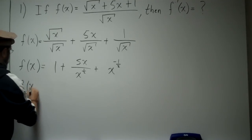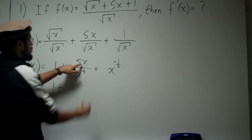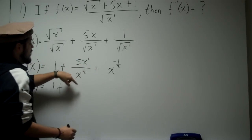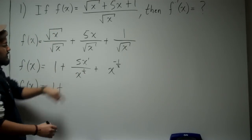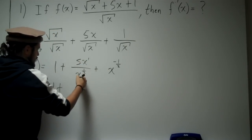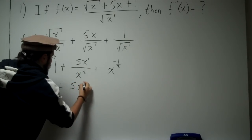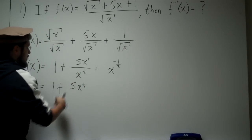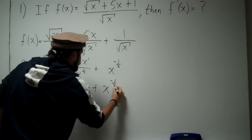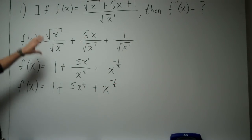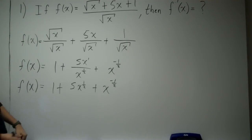Let's keep simplifying before we do any derivatives. That first term is still 1. For the middle term, we have x to the 1 divided by x to the 1 half — subtracting exponents gives us 1 minus 1 half, which is 1 half. So we're left with 5x to the 1 half. Plus x to the negative 1 half. Now we've simplified the function and we're going to take the derivative.